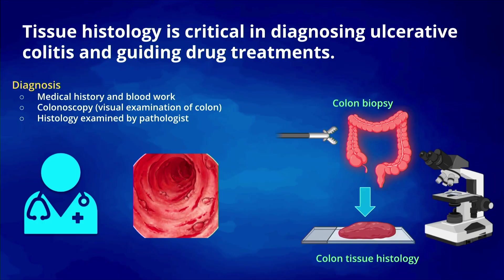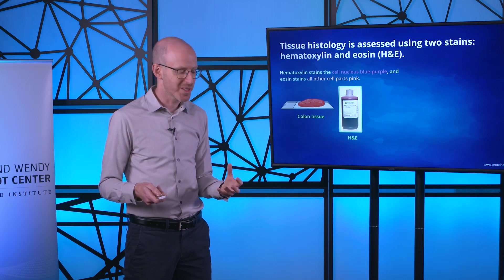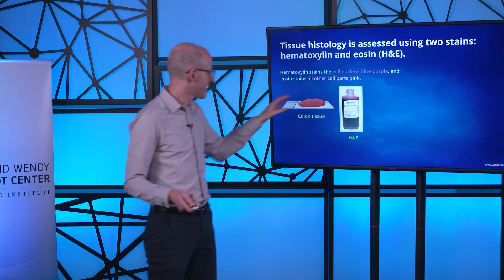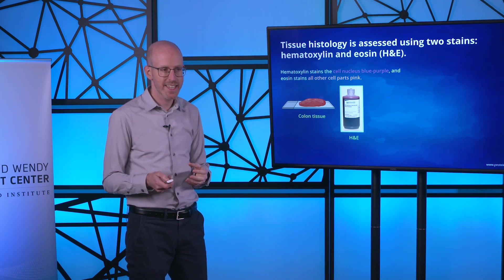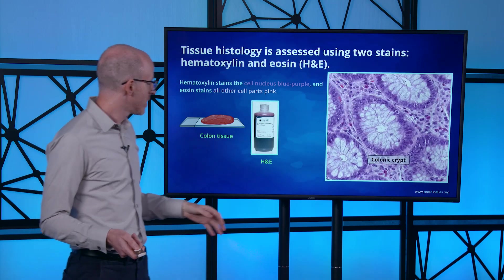Let's introduce histology. A biopsy — a small piece of colon tissue — is taken from the colon, cut into smaller pieces, placed on a slide, and examined under a microscope to look at cellular and tissue features. Pathologists have many tools in their toolkit, and one of the most common is a stain called H&E, which stands for hematoxylin and eosin.